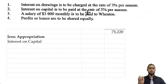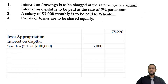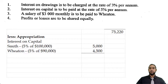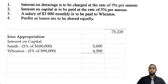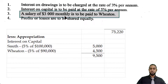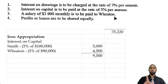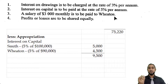We continue with the interest on capital — a simpler straight calculation. Interest on capital is paid at 5% per annum. The capital balances were $90,000 for Wheaton and $100,000 for Smith. So 5% of $100,000 gives Smith $5,000, and 5% of $90,000 gives Wheaton $4,500. Then item three tells us a salary of $3,000 monthly is to be paid to Wheaton. For a full year — 12 months — that scales up to an annual salary of $36,000.